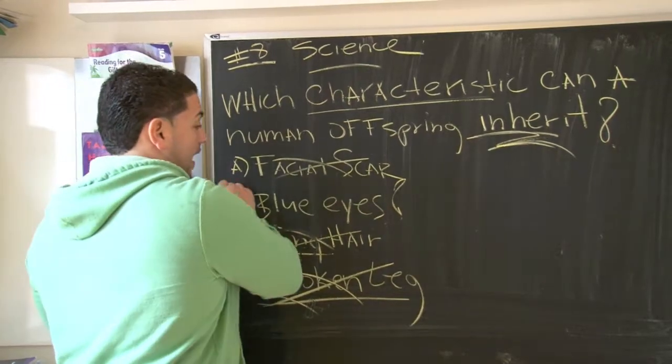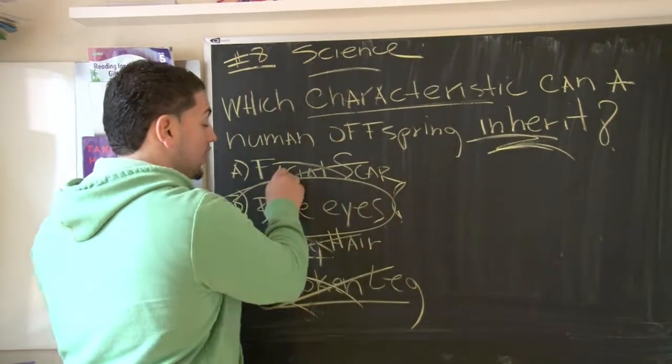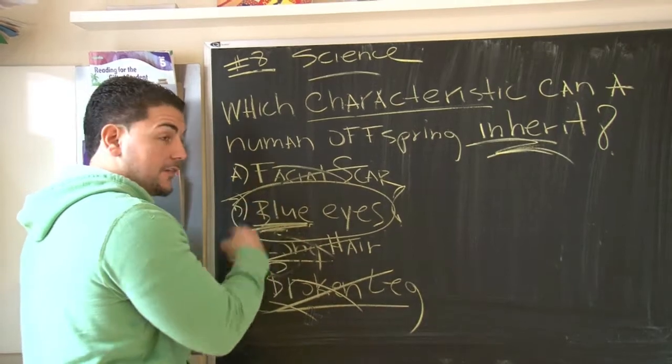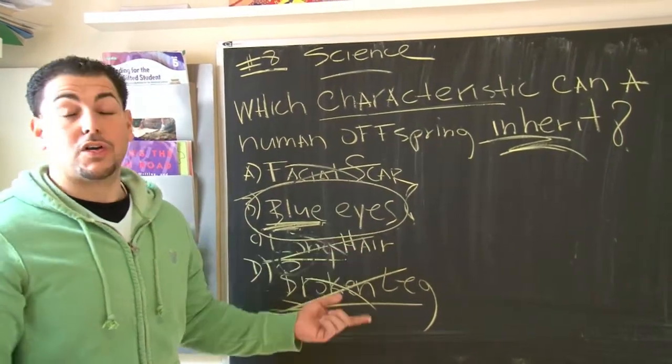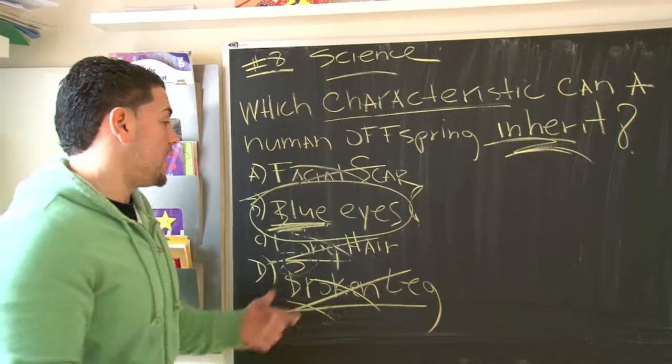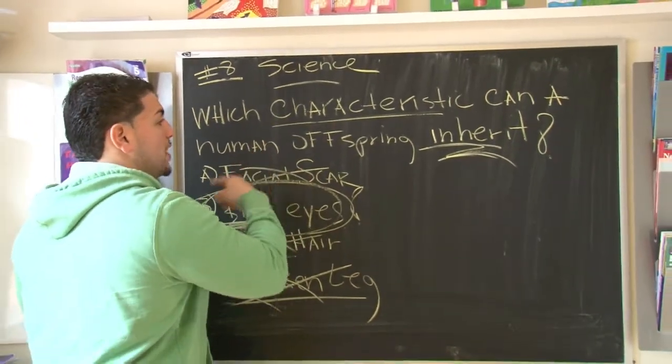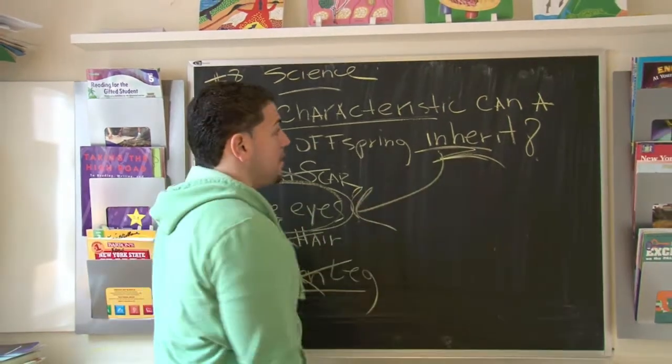So once again, we come back to our best answer. Blue eyes. Now, the blue, we get from either mom or dad. That's the genetic stuff. The eyes, we also get from them too.